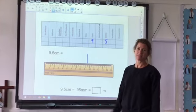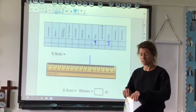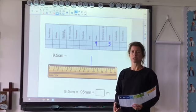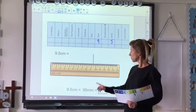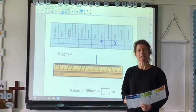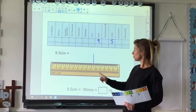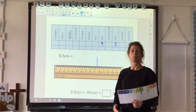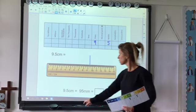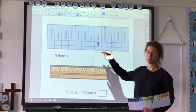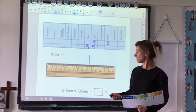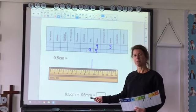OK, so here is a place value grid. We use these a lot in school. And I've put 9.5 on it because I want to be able to convert to millimetres now. So 9.5 centimetres, there are 10 millimetres in every centimetre. That means that we need to multiply 9.5 by 10 to get the conversion to millimetres. So 9.5 multiplied by 10 is 95. So that gives us our 95 millimetres.